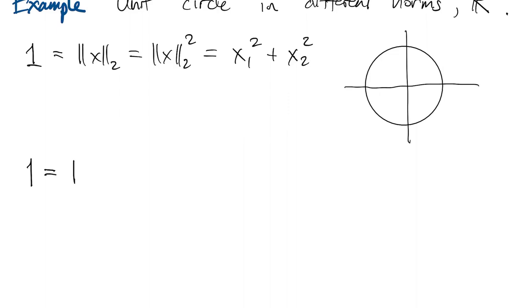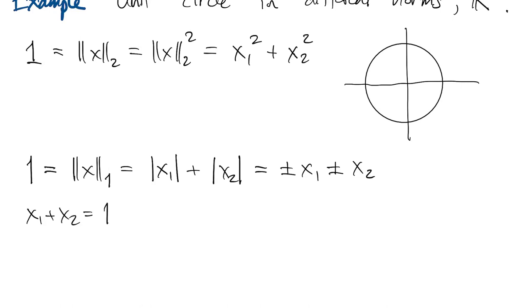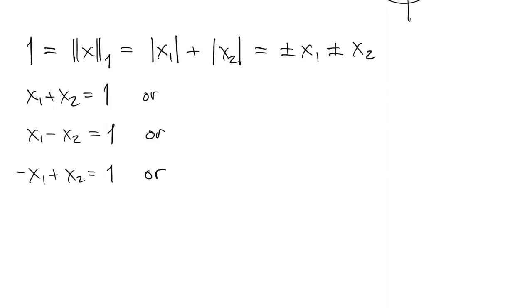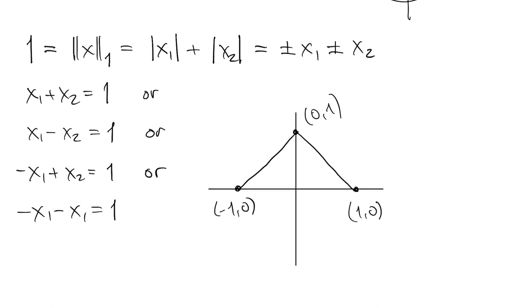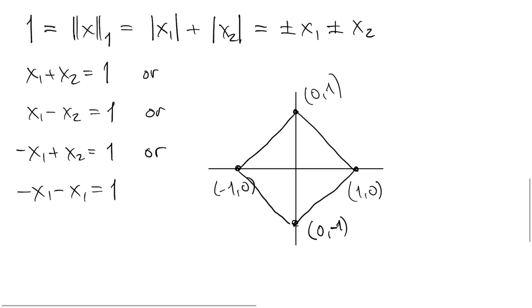But if we look at all the vectors with 1-norm equal to 1, well that means that in real terms absolute x1 plus absolute x2 equals 1, and each of those absolute values could represent a plus or a minus. There are actually four possibilities for all the different sign choices. Now each one of these is a straight line at an angle of plus or minus 45 degrees. When you put them all together, you see that you get a diamond, or a sideways square. So that would represent all the vectors whose 1-norm is equal to 1, or circle in the 1-norm.